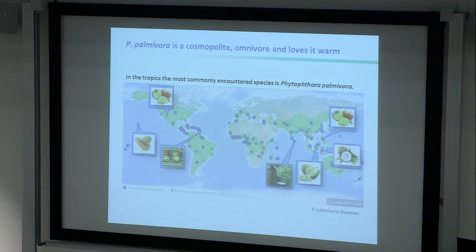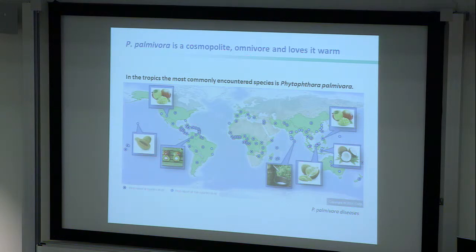Phytophthora palmivora infects a whole range of plants — all cash crops, not commodity crops — including coconuts, durian, mango, papaya, and oil palm. Because these are not food crops, there is much less research into the pathogen-plant interaction. In Colombia, for example, there is now a lot of effort because oil palms were introduced to change the economy and replace coca plantations, but since the oil palms are being killed by Phytophthora, farmers are reverting back to coca, which is something the politics don't really like.